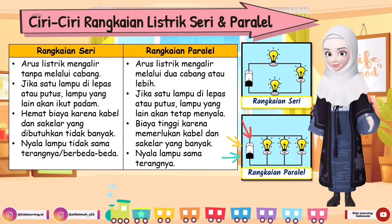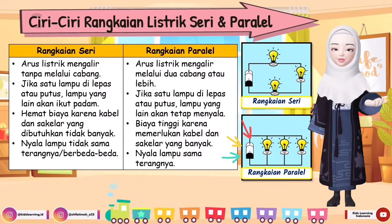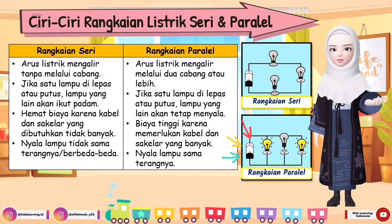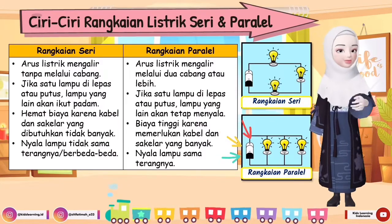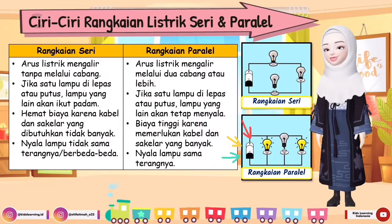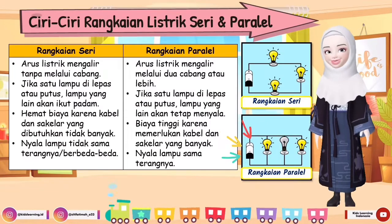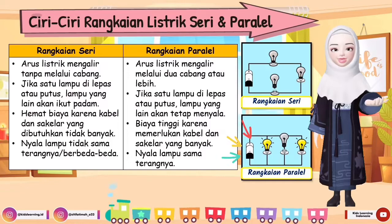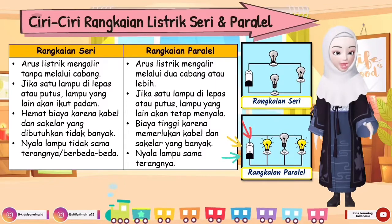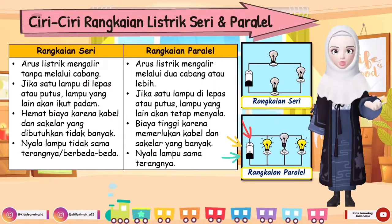Sedangkan untuk ciri rangkaian paralel: arus listrik yang mengalir melalui dua cabang atau lebih; saklar yang digunakan bisa lebih dari satu; jika satu lampu dilepas atau putus, lampu yang lain akan tetap menyala; membutuhkan biaya tinggi karena memerlukan kabel dan saklar yang banyak; dan nyala lampunya juga akan sama terangnya.